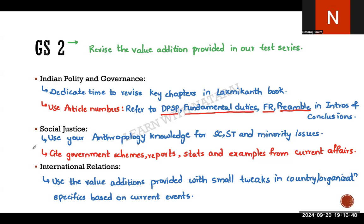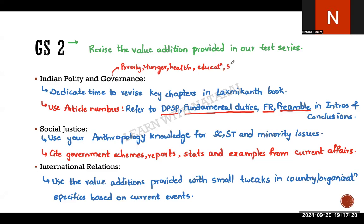For governance, note these common topics: poverty, hunger, health, education, skill development, bureaucracy, bureaucratic reforms, and panchayati raj institutions. These are very commonly asked in UPSC. We've provided value-addition for many of these and you've written on them multiple times. Just revisit them to ensure you've covered all angles. If you feel you're lagging in any area, reach out for additional points.